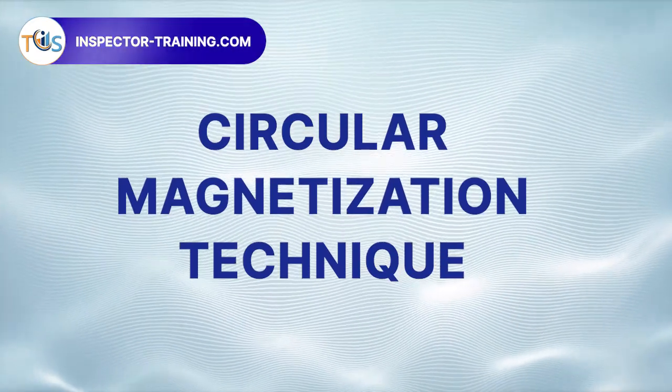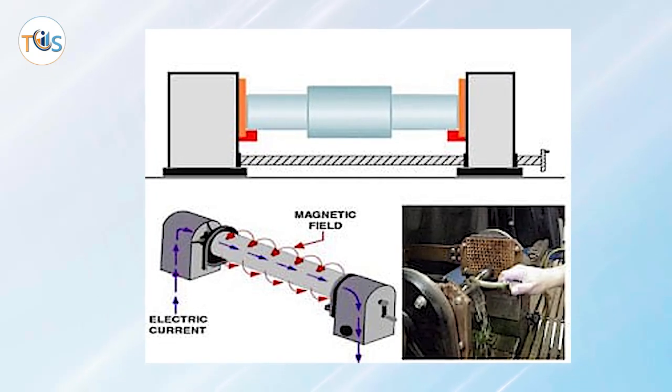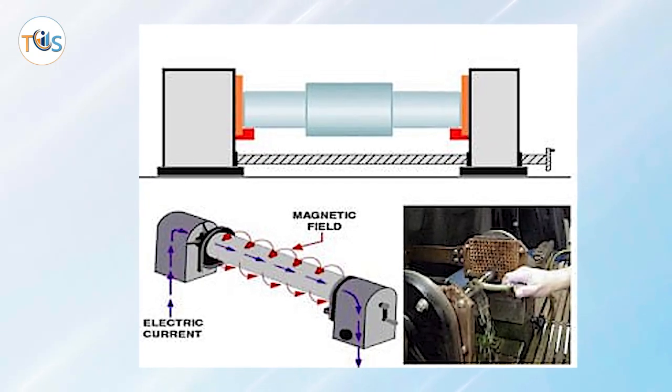Circular Magnetization Technique. Electric current is passed through the part or through an electrical conductor within the part. The circular magnetic field cutting across the crack attracts and holds iron powder to indicate the invisible defects.